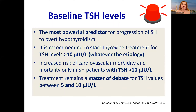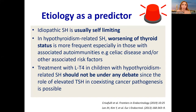Treatment remains a matter of debate in those with TSH ranging from 5 to 10, but above 10 is very clear and well decided. What about the etiology as a predictor? Idiopathic subclinical hypothyroidism is usually self-limiting — in such a case you do not treat except if the TSH exceeds 10.